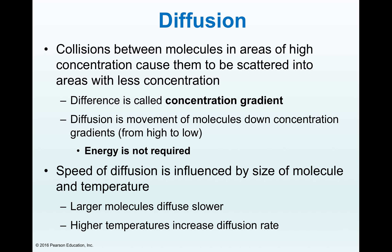For the process of diffusion to happen, we need something known as a concentration gradient, which basically means you need to have a high concentration in one area and a low concentration in another. When molecules start to move from the higher concentration to the lower concentration, that is referred to as the process of diffusion. This process does not require any energy input and hence it's referred to as a passive process.